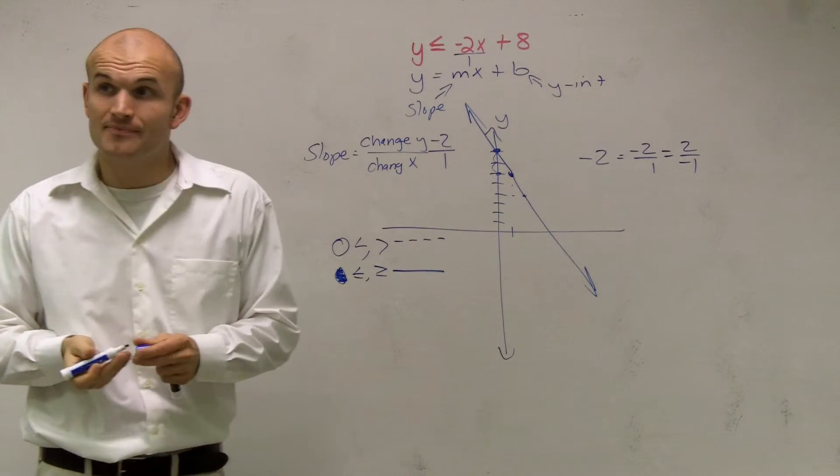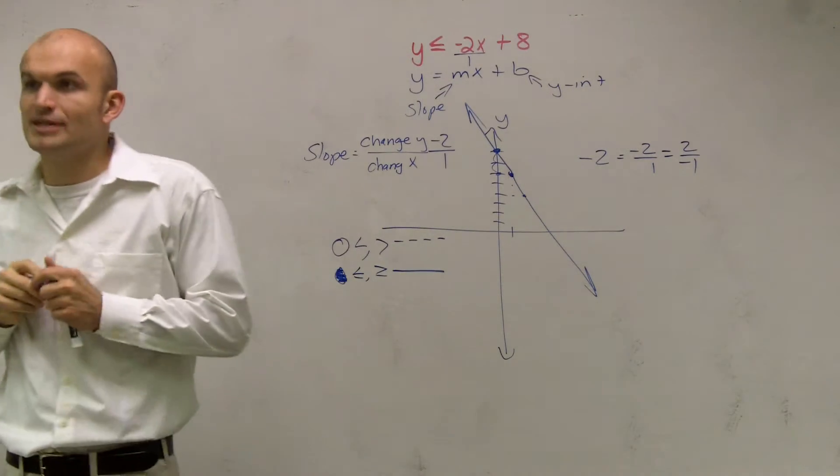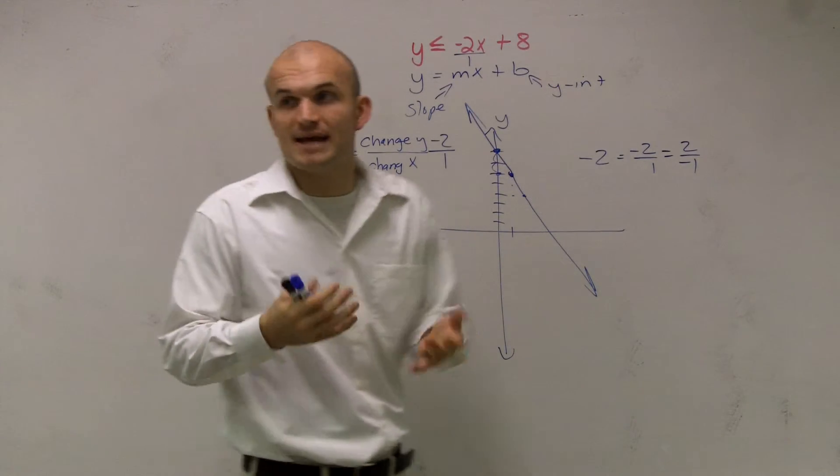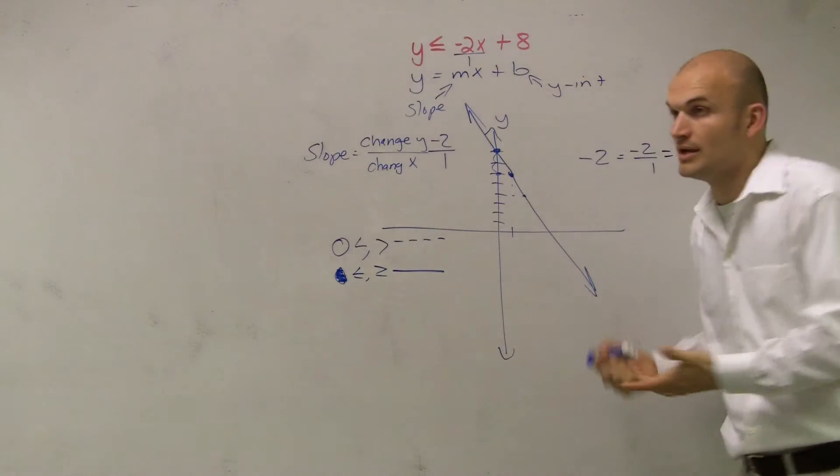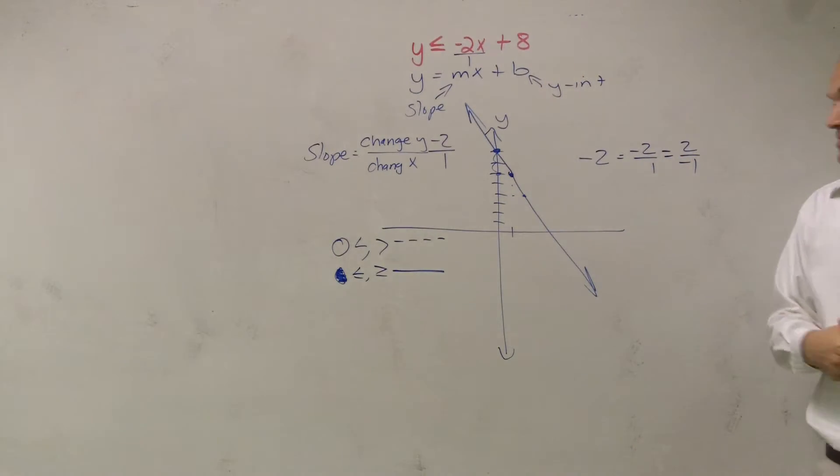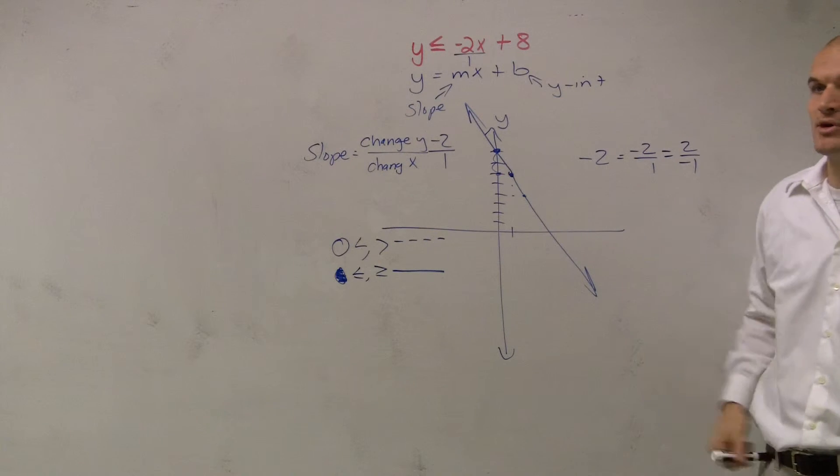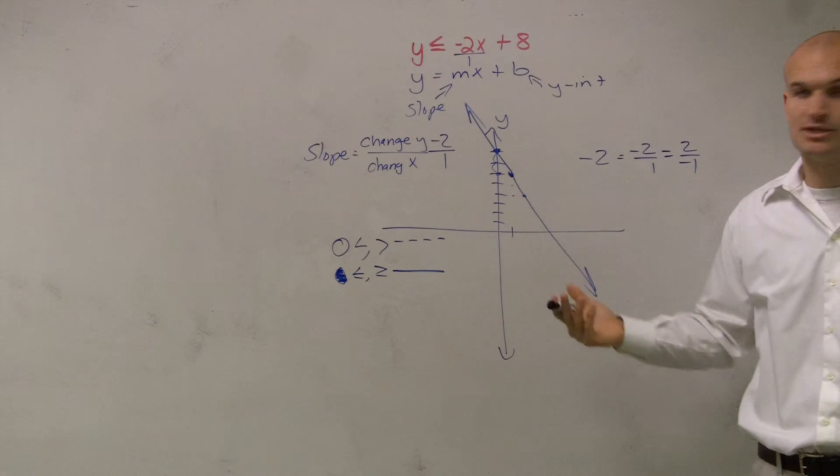Now lastly, in linear inequality, it doesn't always just say it works for one value. It can work for many values. So we need to look at this and say, what other numbers will make our inequality true? Our best point that we like to test is (0, 0).